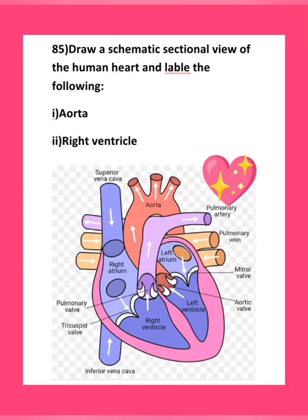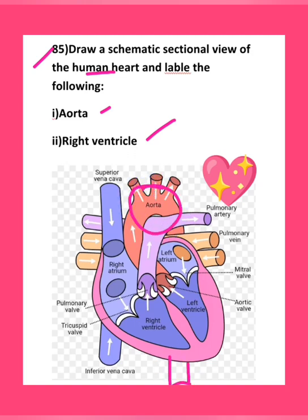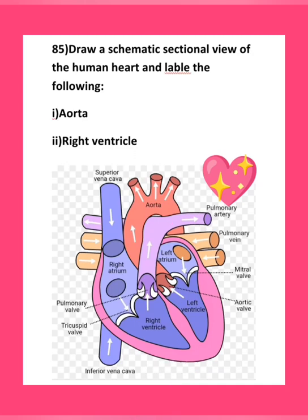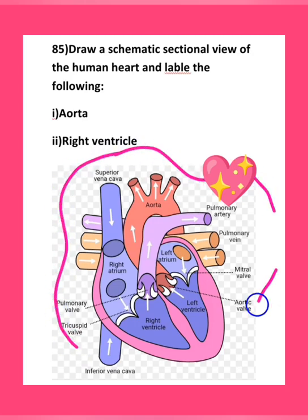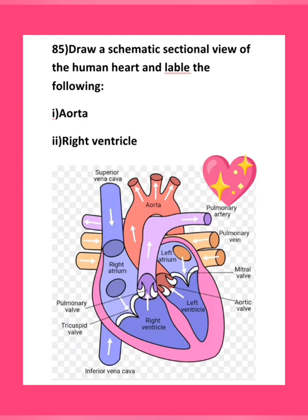Question number 85 (last question): draw a schematic sectional view of the human heart and label the aorta and right ventricle. Draw the section view clearly, marking the aorta — which is shown at the top or connecting region — and the right ventricle on the appropriate side. You may label additional parts; there is no penalty. The diagram must be neat, as examiners look for at least basic neatness.